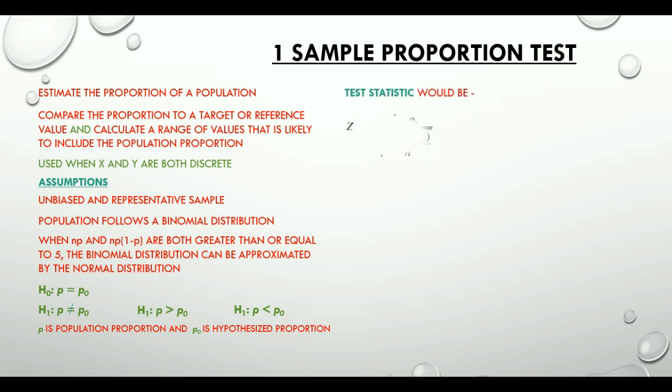Test statistic for a one sample proportion test is denoted by z_calc or z calculated, which is equal to p̂ minus p₀ divided by root over p₀ multiplied by (1 minus p₀) divided by n, where p̂ is observed probability of one certain outcome occurring, p₀ is the hypothesized probability, and n is the number of trials.